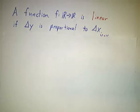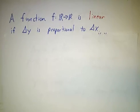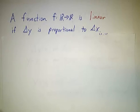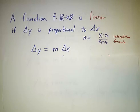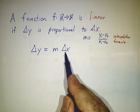We say that a function is linear if delta y is proportional to delta x. If you change x a little bit, you change y a little bit. You change x twice that much, you change y twice that much. You change x three times as much as before, you change y three times as much as before. In that case, you can write delta y is a constant which we'll call m times delta x.